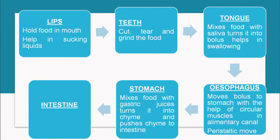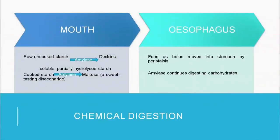The stomach mixes the food with gastric juice and turns it into a chyme, then pushes the chyme into the intestine. The intestine has a small and a large intestine. In the small intestine, maximum absorption of nutrients takes place, and in the large intestine, basically water is absorbed. Due to peristaltic movement, food moves from the small to the large intestine, and ultimately the waste material is thrown out of the body.